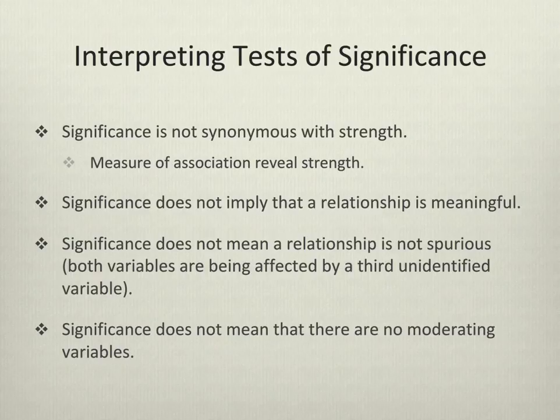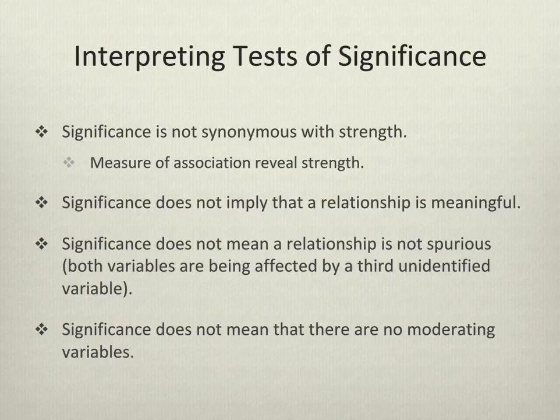Significance doesn't mean that a relationship is meaningful. You can find statistically significant relationships between things that aren't really going to help your field or anyone else. Good social science should have either a theoretical or a practical application, or maybe both. Significance also doesn't mean that a relationship isn't spurious — both variables might be affected by a third, unidentified variable. You might find it appears as if two things are associated, but it's really a third variable causing both, and those things are actually completely unrelated to each other. There also might be moderating or mediating variables that are important to understand, and significance isn't going to tell you that those exist.